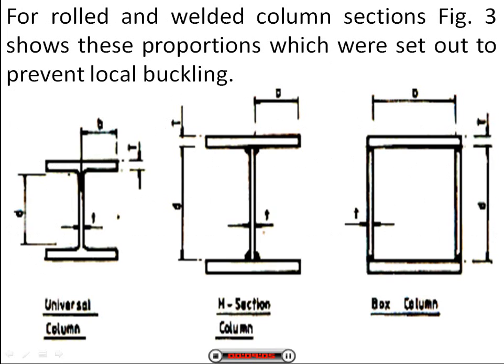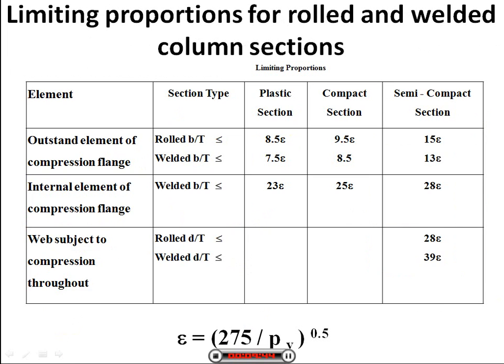We have the rolled and welded column sections. Figure 3 shows the proportions set out to prevent local buckling. Width is measured as B, height as D, and we have the thickness of the web and flange. This shows a universal column, an H-column, and a box column, along with the limiting proportions for rolled and welded column sections. For the outstanding element of the compression flange, we have the plastic section, compact section and semi-compact section classifications.